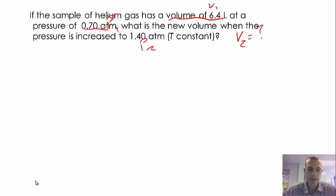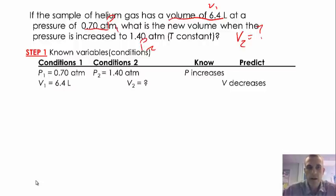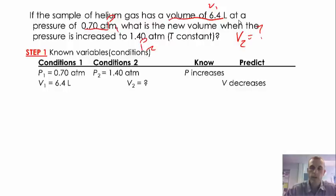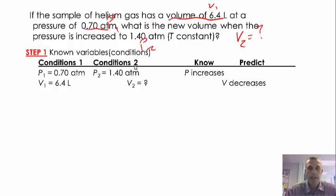Step one: identify our known variables. P1 is 0.7 ATMs and V1 is 6.4 liters. I underline what I know and put the variables above it. Condition 2: P2 is 1.4 ATMs and we're looking for V2. The pressure is increasing from 0.7 up to 1.4, so our prediction is that the volume is going to decrease. The pressure is going up, which means the volume has to go down because of Boyle's Law.